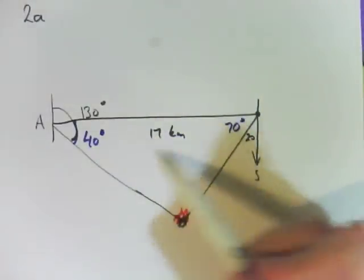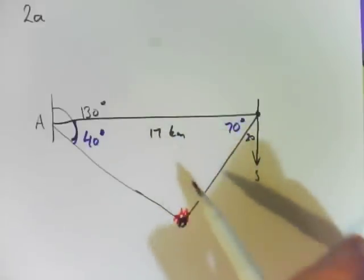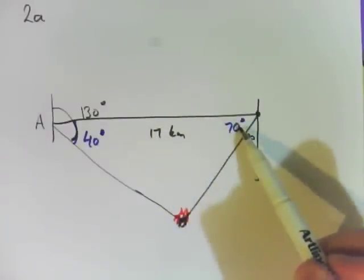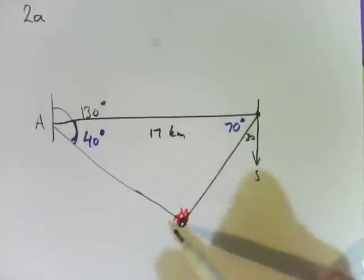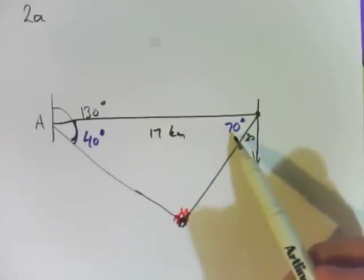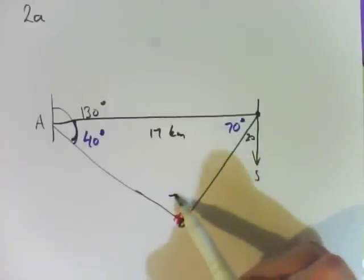We have one length. So we can use the sine rule and this angle because we can calculate this angle here. So we can calculate all three angles. So 40 and 70 is 110, which makes this angle here 70 degrees.